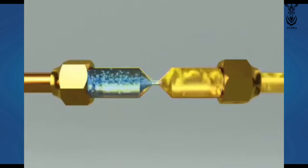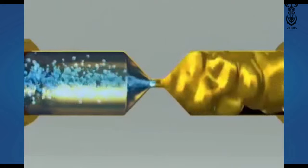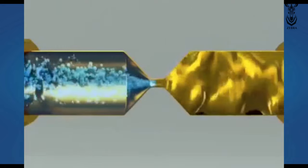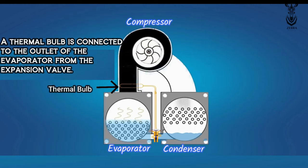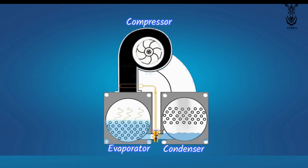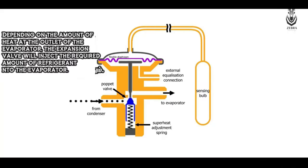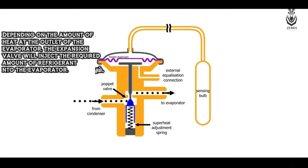The second role of the expansion valve is to send the required amount of refrigerant to the evaporator. A thermal bulb from the expansion valve is connected to the outlet of the evaporator. With the help of this thermal bulb, the expansion valve sends the required amount of refrigerant to the evaporator depending on the temperature of the evaporator outlet.